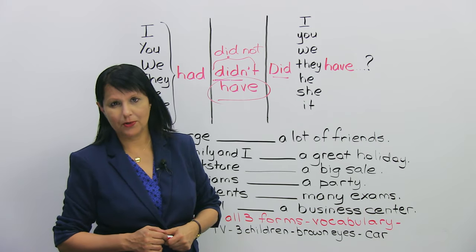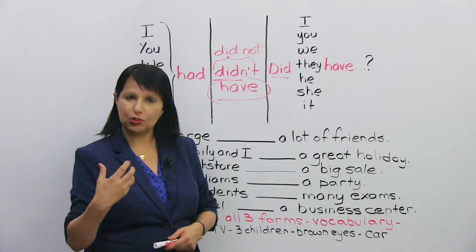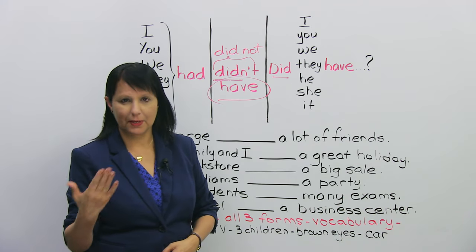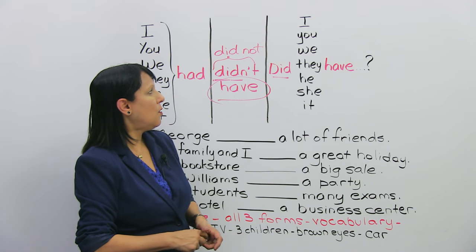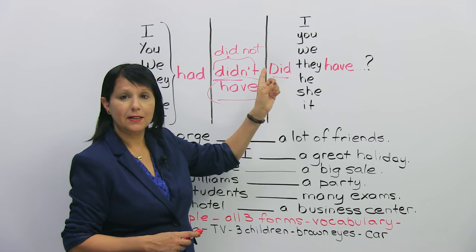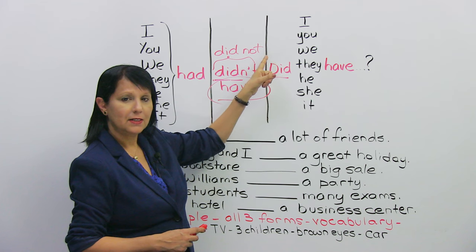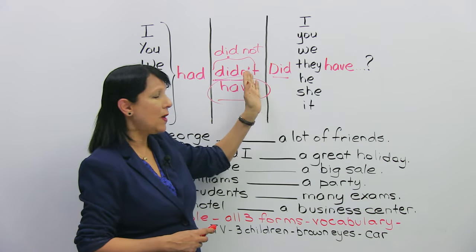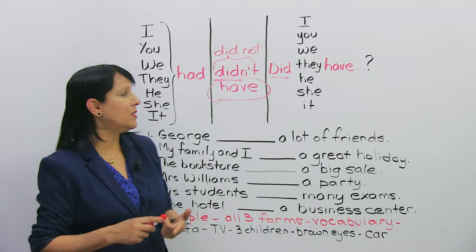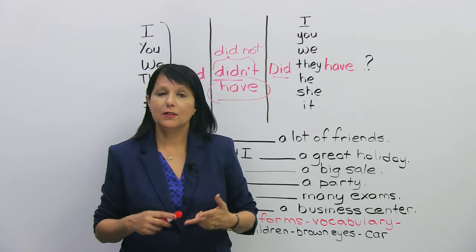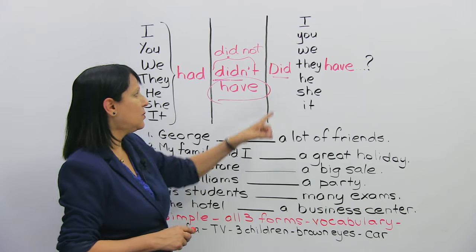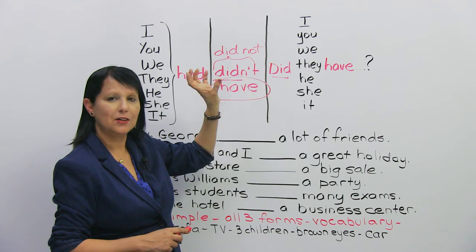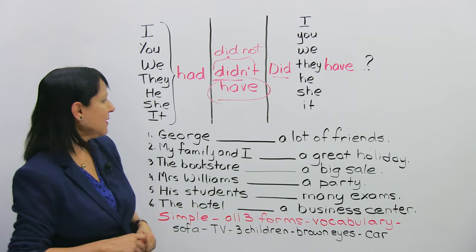And the other thing to remember is that when we add a question word, we still keep this order. What do I mean? For example, when did they... Okay? When did they have the meeting? Okay? Where did they have the meeting? Right? So, whether we're saying when, where, who did they meet, right? We're still keeping this construction. We're just adding a question word before that. Okay.